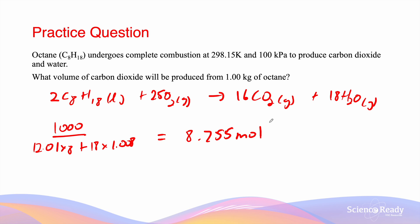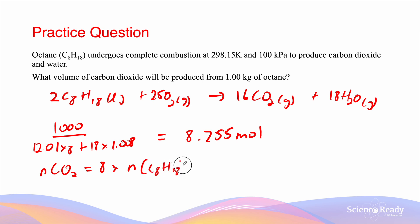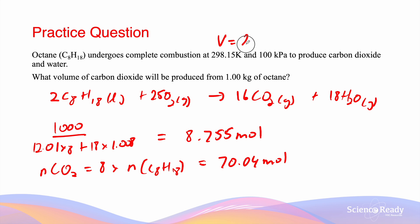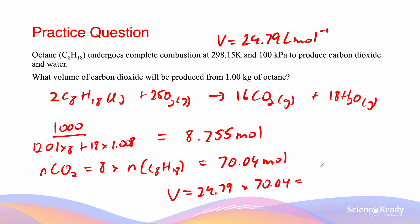From the stoichiometric ratio, the moles of CO₂ gas is eight times the moles of octane, so moles of CO₂ = 8 × 8.755 = 70.04 moles. Since Avogadro's law tells us molar volume is constant for ideal gases at the same conditions — RTP, where molar volume = 24.79 L/mol — the volume equals 24.79 × 70.04 = 1740 liters, given in three significant figures.